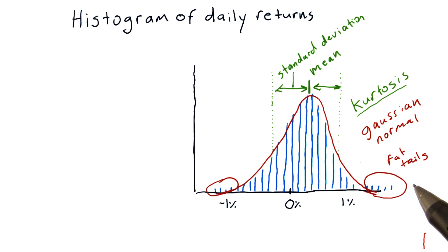If you were to measure the kurtosis of this histogram, you would get a positive number, meaning that there are more occurrences out in these tails than would be expected if it were a normal distribution.